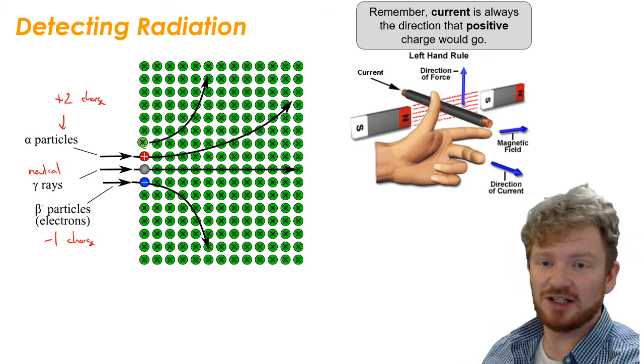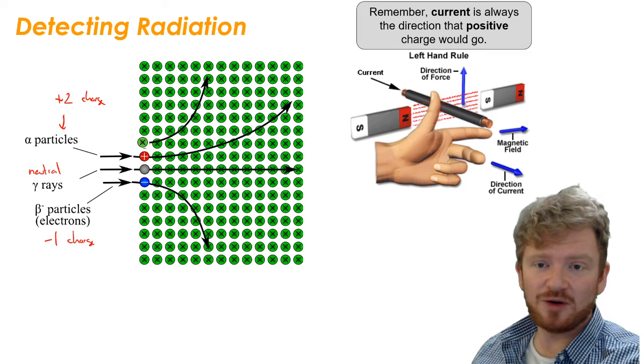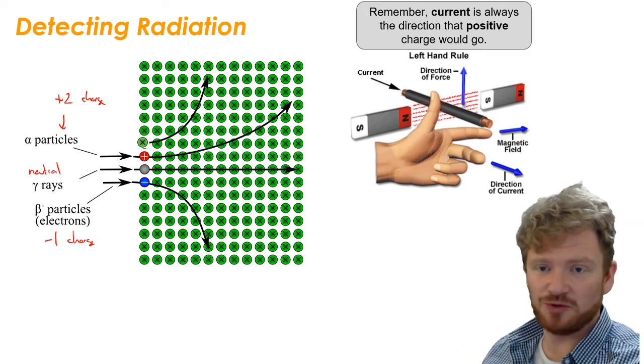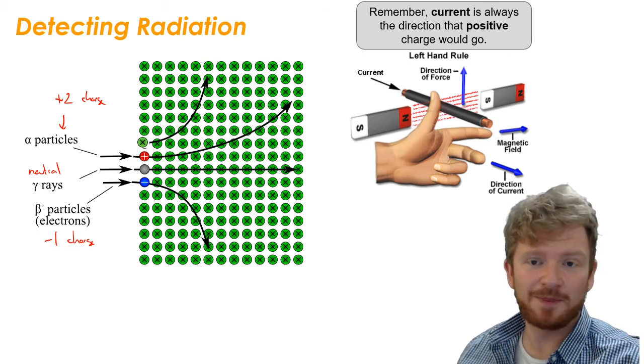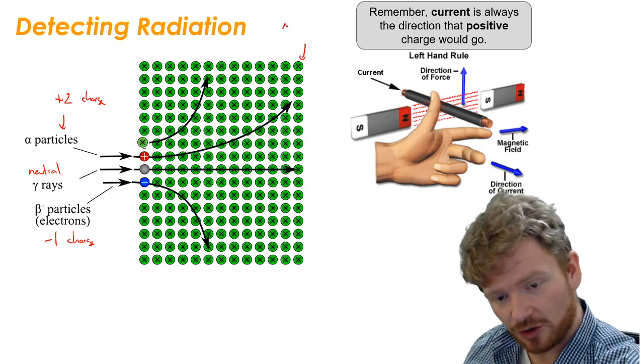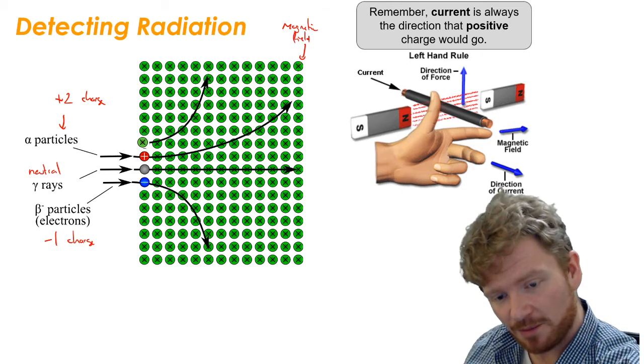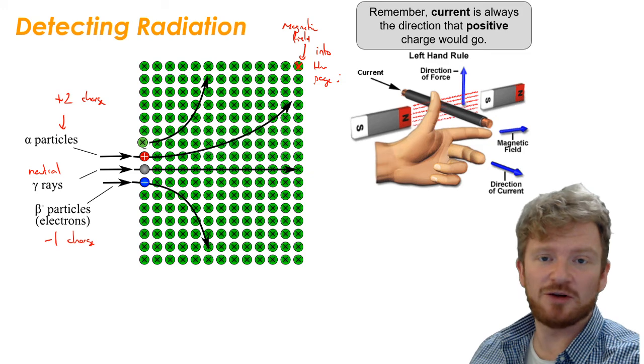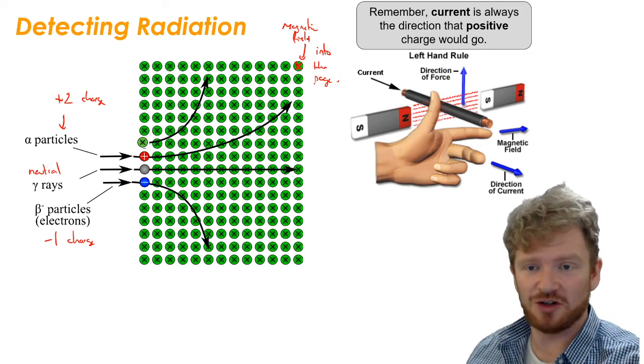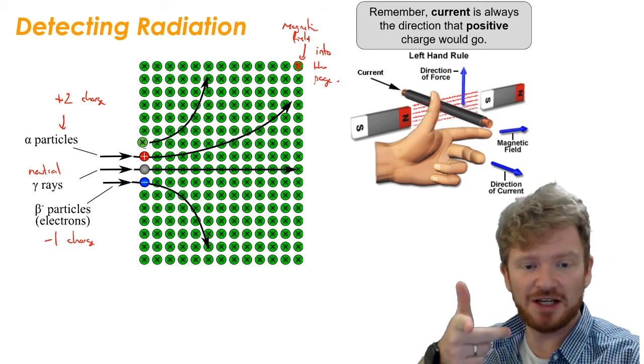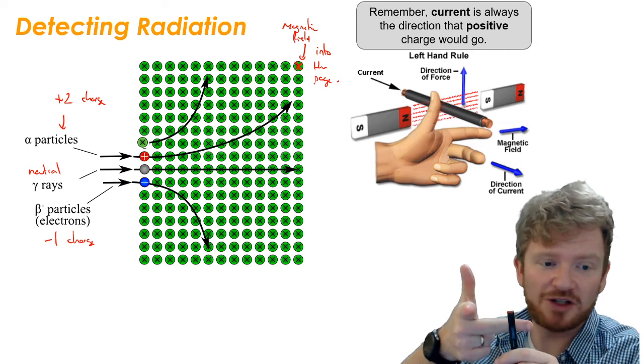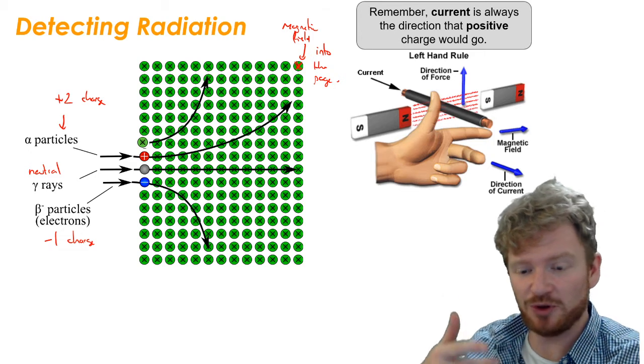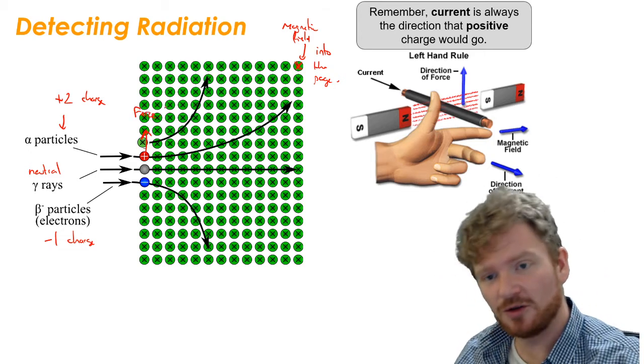One of the things that we often do in physics is we try and detect radiation using magnets and electric fields. Here I've got alpha, beta and gamma radiation being pushed or fired through a magnetic field. If you think back to Fleming's left-hand rule, these green dots are showing a magnetic field. The crosses mean that the field is going into the page. When we use Fleming's left-hand rule, we say that the current is direction that positive charge would travel in. For the alpha particle, you're going to point your finger into the page for the magnetic field, your second finger for the current points to the right of the screen, and you'll see that your thumb points up. So the force on the alpha particle pushes it up towards the top of the page.